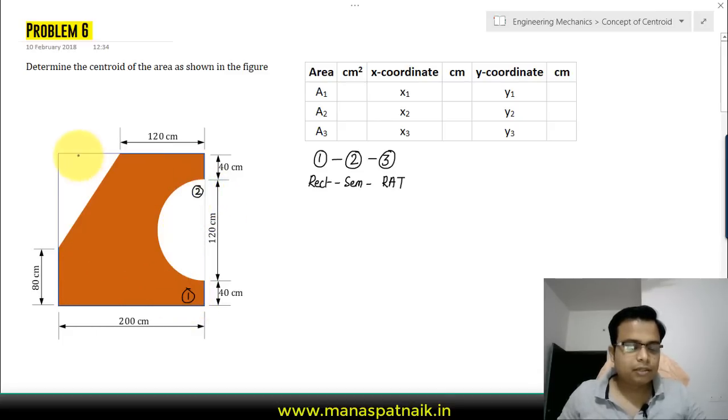First thing is to calculate the area. Area calculation is pretty simple. A1 is equal to the area of the rectangle, that is 200 by 200, which gives you 40,000.